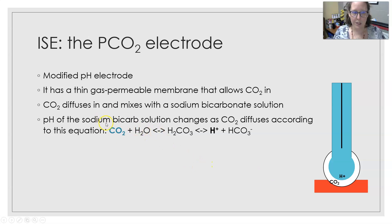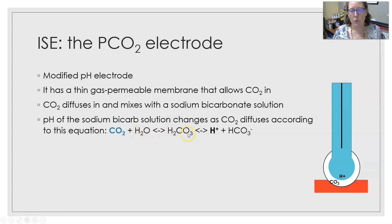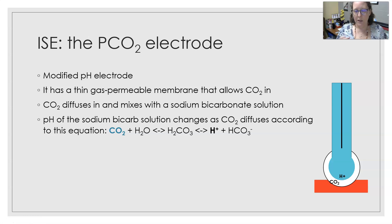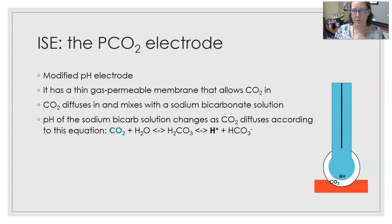The equation occurring in this part of the electrode is: CO2 picks up a molecule of water to become carbonic acid, which then dissociates into hydrogen ions and bicarbonate. So for every molecule of CO2 that crosses over, a hydrogen ion is produced. The more hydrogen ions produced, the more cross the membrane. From this, you can equate the pH change to the CO2 concentration.